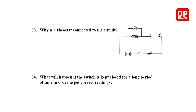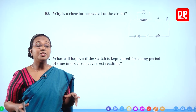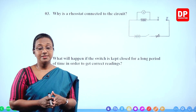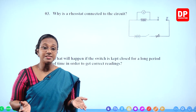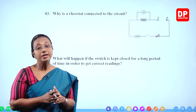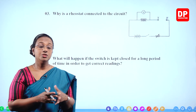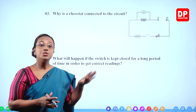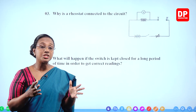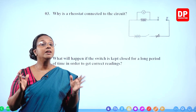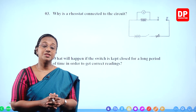Third question: why is a rheostat connected to the circuit? The rheostat is a variable resistor. By changing the resistance, you can control the current flow in the circuit. Since we want to measure potential difference and current, we need to get about five sets of readings.